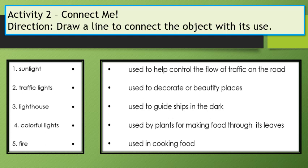Activity 2: Connect Me. Draw a line to connect the object with its use. 1. Sunlight. 2. Traffic lights. 3. Lighthouse. 4. Colorful lights. 5. Fire.